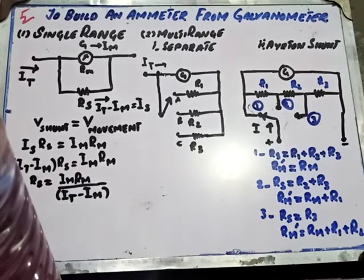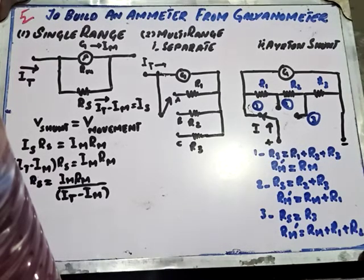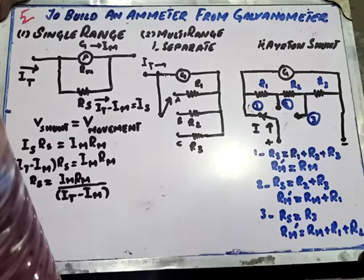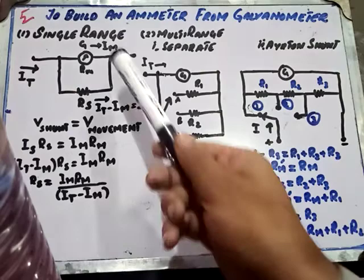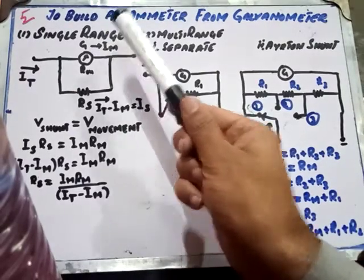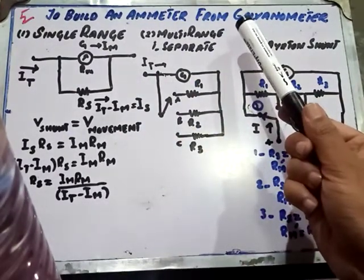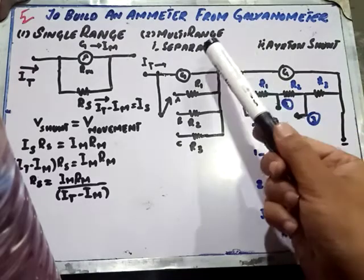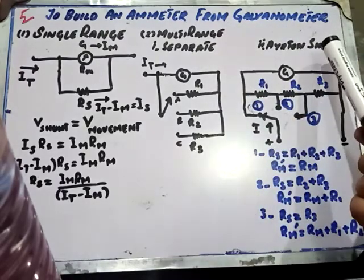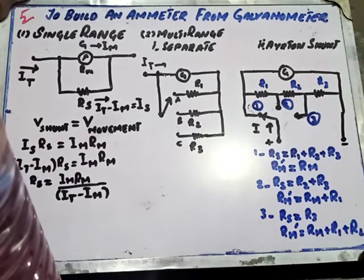Bismillahirrahmanirrahim. This is Lab 5 of Instrumentation Environments, and we intend to build an ammeter from a galvanometer. We know that a galvanometer is only a current sensing device, so in order to have an ammeter from a galvanometer, we need to connect a low value of resistance in parallel with it. We will be considering a single range ammeter and a multirange ammeter, with two variants: separate shunt and Ayrton shunt.